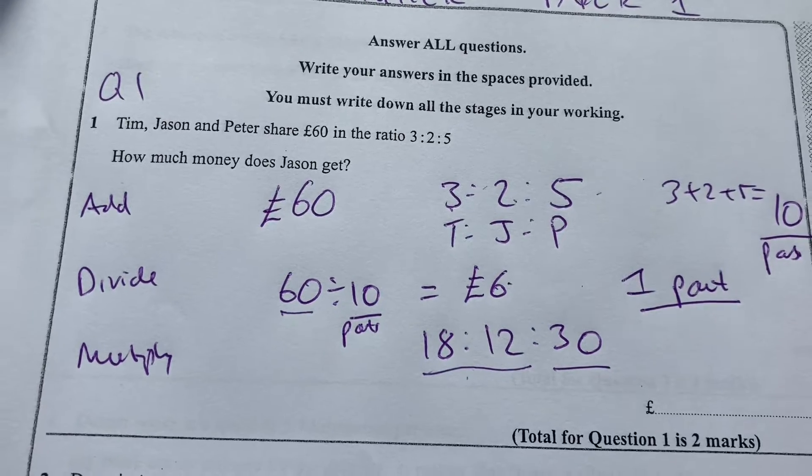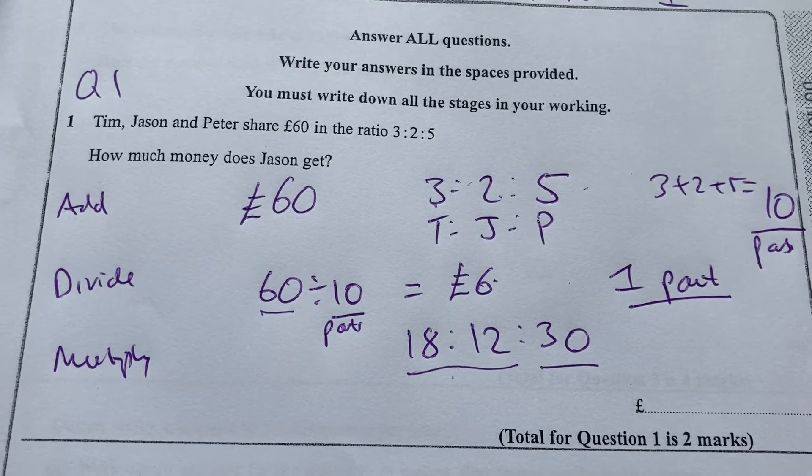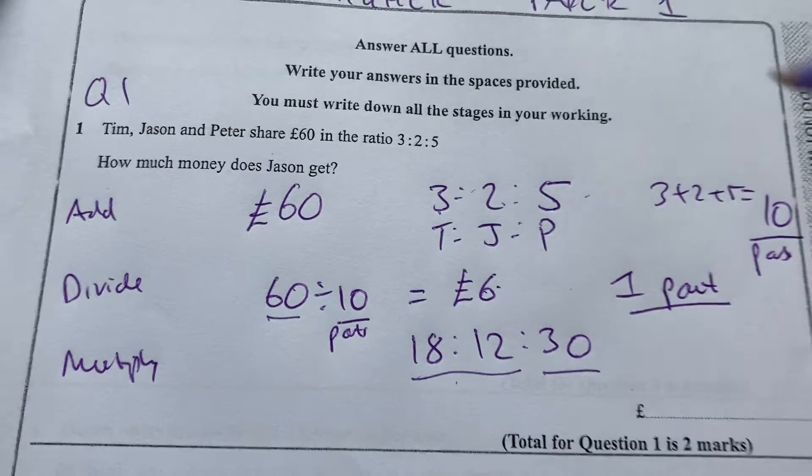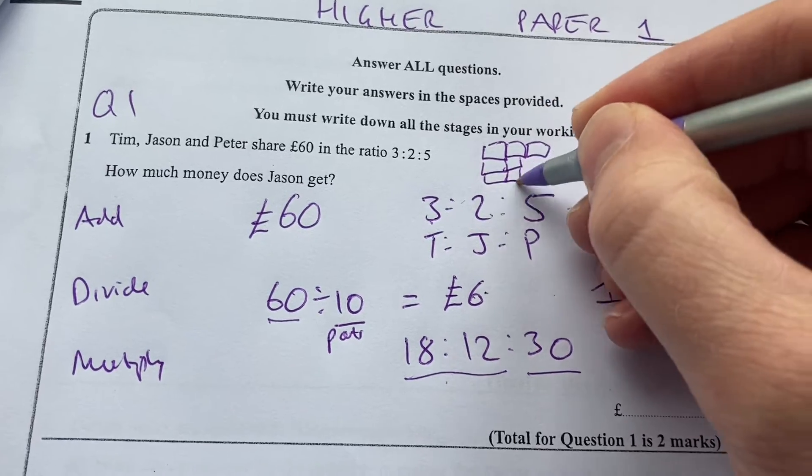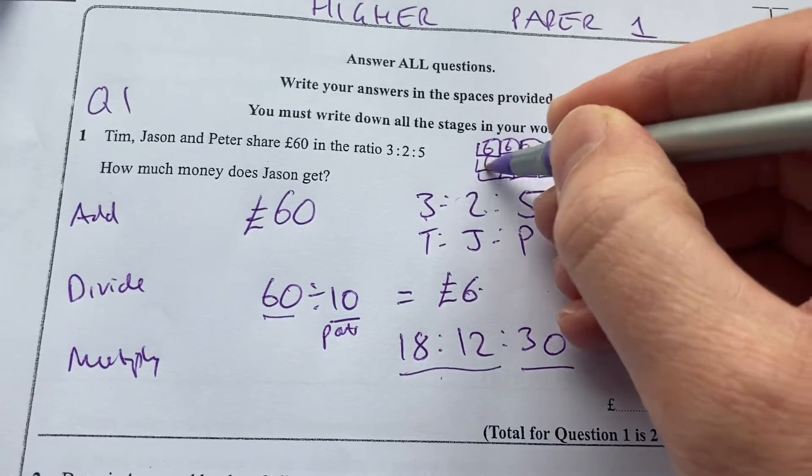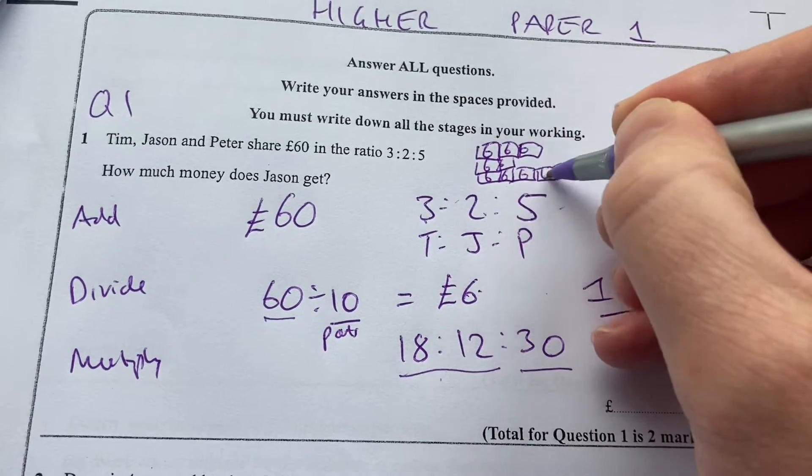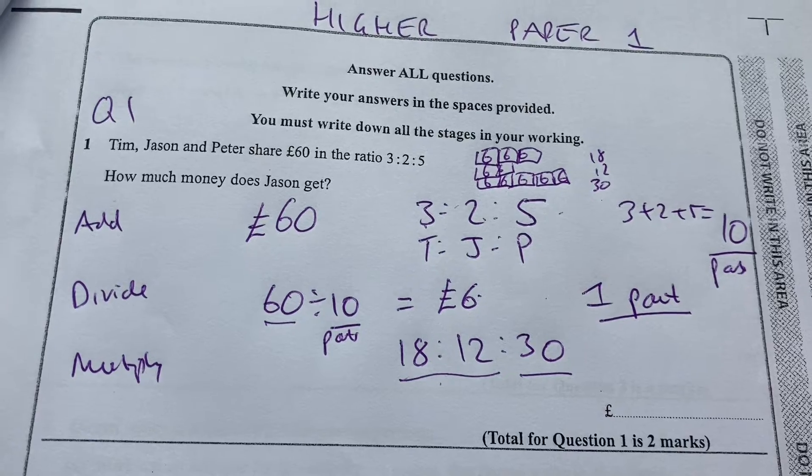You can also use this bar model approach if you look at some other videos. And you could have 3, and then 2, and then 5. And if you put 6 in each of those, you'll see 18, 12, and 30.